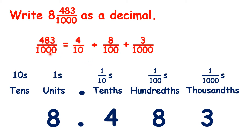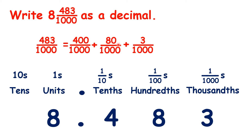That's because 483 thousandths is the same as 4 tenths plus 8 hundredths plus 3 thousandths. If we multiply both the numerator and denominator of our 4 tenths by 100, we have an equivalent fraction of 400 thousandths. And if we multiply both the numerator and denominator of our 8 hundredths by 10, we have an equivalent fraction of 80 thousandths. So 400 thousandths plus 80 thousandths plus 3 thousandths is the same as 483 thousandths. But because we can only have one digit in each place value, we need to have 4 tenths and 8 hundredths.